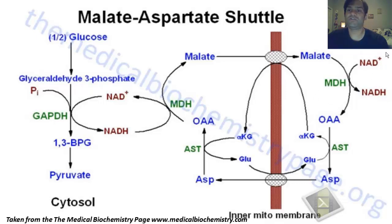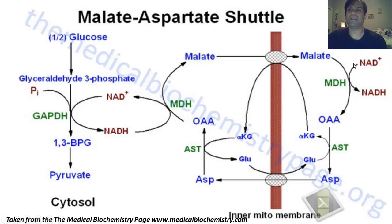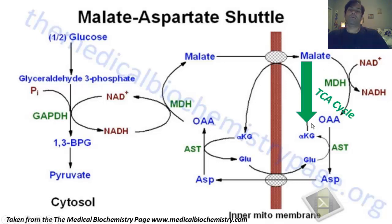So malate dehydrogenase takes malate and converts it to oxaloacetate. NAD+ gets reduced to NADH, and malate gets oxidized to oxaloacetate.